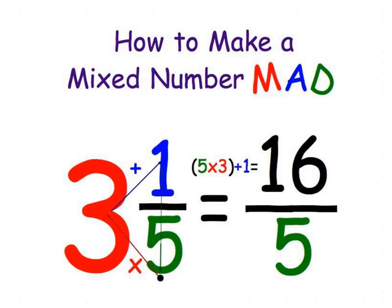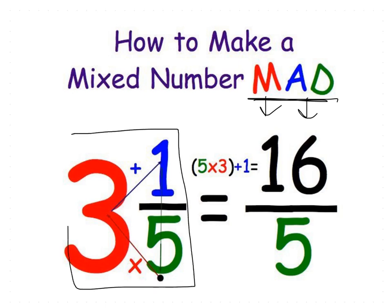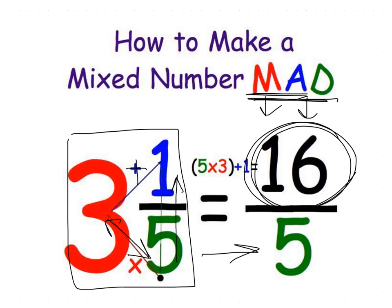To convert a mixed number into an improper fraction, remember the word MAD: Multiply, Add, keep the Denominator. For example, with 3 and 1/5: multiply the whole number by the denominator — 3 by 5 is 15. Then add the numerator — 15 plus 1 is 16. That's the new numerator, and we keep the denominator as 5. So the answer is 16/5.